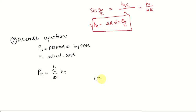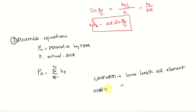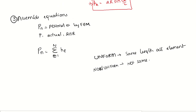Let us consider a uniform mesh, where all elements have the same length. When elements do not have the same length, that is called a non-uniform mesh. For a uniform mesh, P_N = N × H_E — simply multiply the number of elements by the single element length.